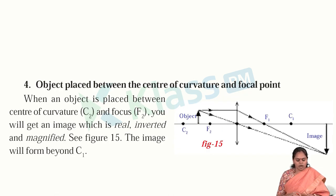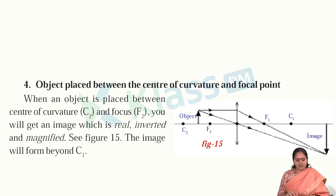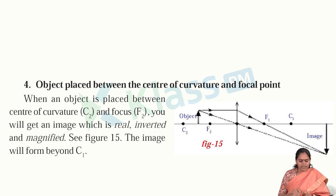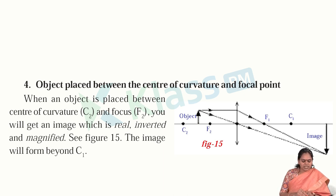Situation 4: object placed between the center of curvature and the focal point. When the object is placed between center of curvature and focal point, we get a real, inverted, and magnified image formed beyond C1, the center of curvature. With this picture, the object is placed between C2 and F2, and the image is forming beyond the center of curvature, inverted and magnified in size.